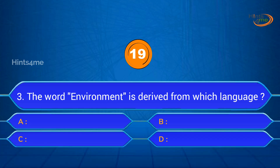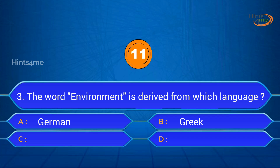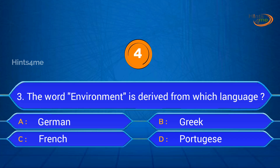Question 3: The word 'environment' is derived from which language? A. German, B. Greek, C. French, D. Portuguese. Answer: C. French.